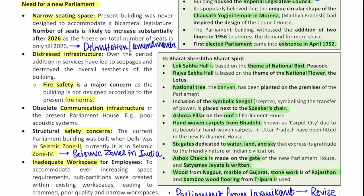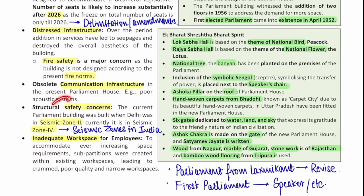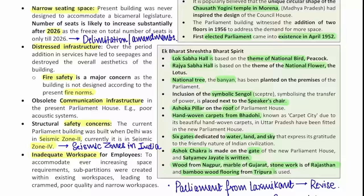The current parliament building's infrastructure is distressed and there is a fire safety concern as it's not as per current fire norms. Communication infrastructure in the current parliament house is also obsolete. When the building was originally built, Delhi was in seismic zone two — now it is in seismic zone four. I would recommend that you revise seismic zones in India when revising this section. There is also inadequate workspace for employees. So this page covers both prelims and mains information — they are sorted.